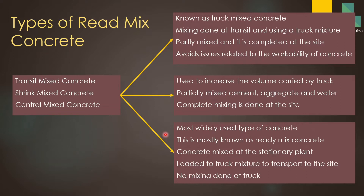Central mix concrete is the most widely used type and is what people most commonly refer to as ready mix concrete, even though the other two types also fall under that category. The concrete is mixed at a batching plant and loaded into a truck mixer for transport to the site. No mixing is done in the truck — the truck mixer only rotates to maintain consistency and capacity during transport.